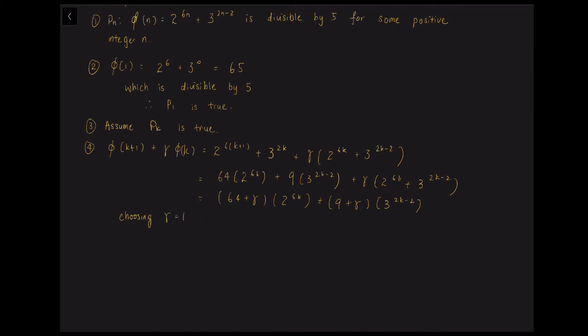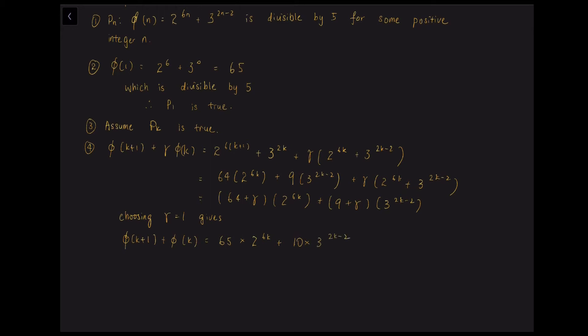So what we do next is to choose gamma equals to 1. And this gives phi k plus 1 plus phi k equals to 65 times 2 to the power of 6k plus 10 times 3 to the power of 2k minus 2. And both 65 and 10 are divisible by 5.